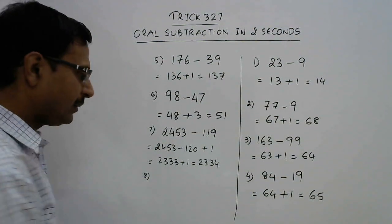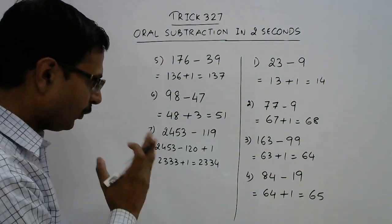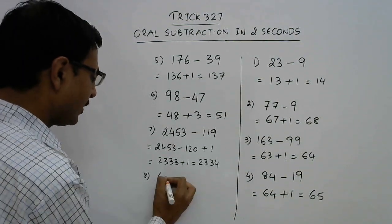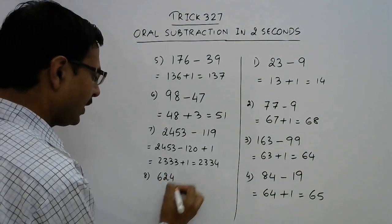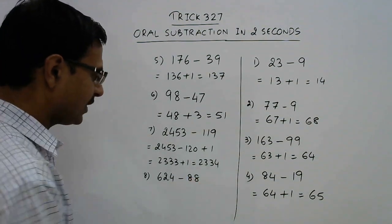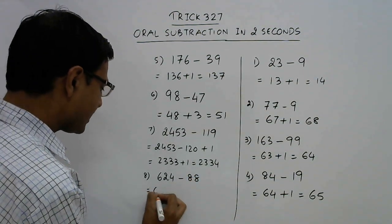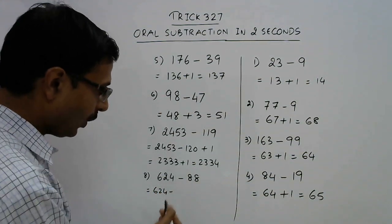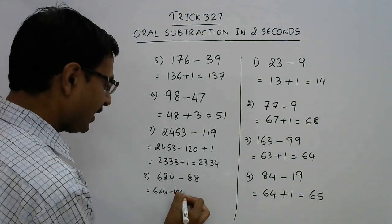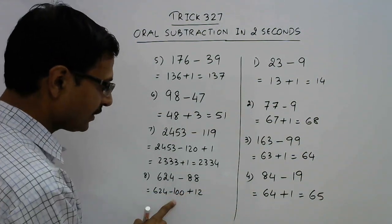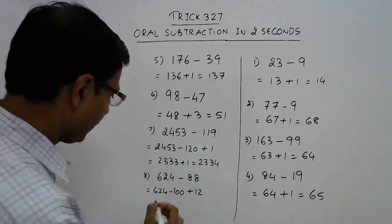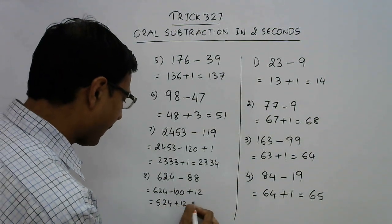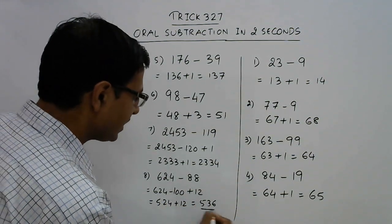One more example — this time moving away from a single base. We have 624 and we need to subtract 88. We can subtract 100 and add 12 back, because subtracting 100 and adding 12 is the same as subtracting 88. So 624 minus 100 is 524, and adding 12 gives 536 as the answer.